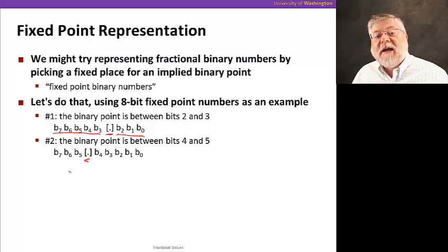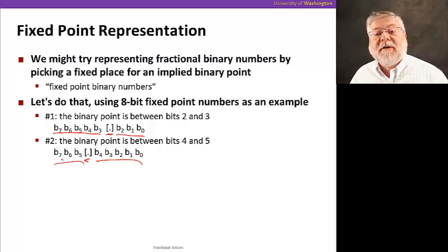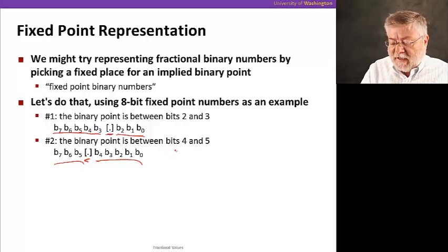Of course, we could have chosen to put the binary point elsewhere, fixed it at a different place, with only three bits over on the left and five bits to the right. Well, now this only lets us go up to seven point something. Seven and what? Well, there's five bits here, so we can represent up to 31 30 seconds. So the largest number we can have here is 7 and 31 30 seconds, while here we had the numbers up to 31 and 7 eighths.